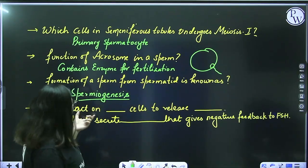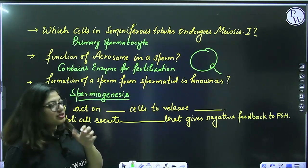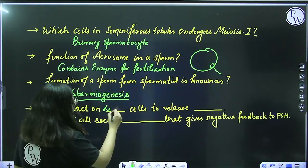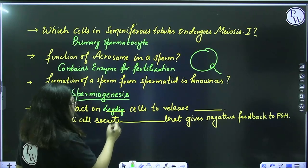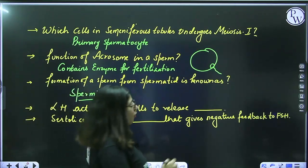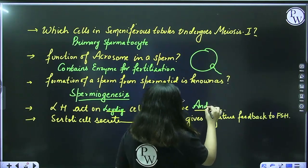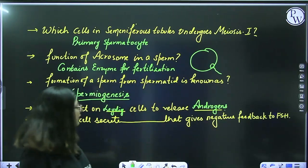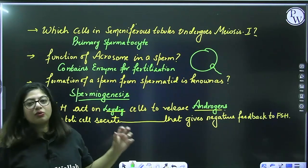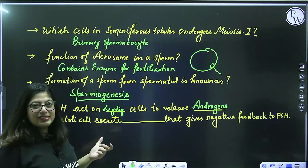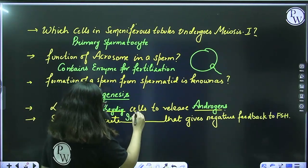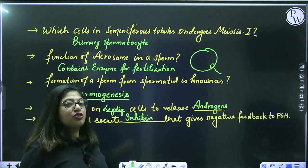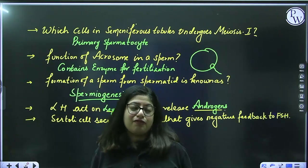LH acts on Leydig cells, also known as interstitial cells, to release the hormone androgens. Sertoli cells secrete inhibin, and inhibin gives negative feedback to the pituitary to suppress FSH release.